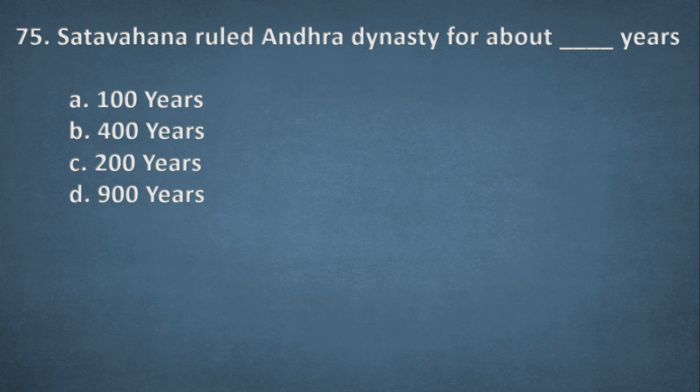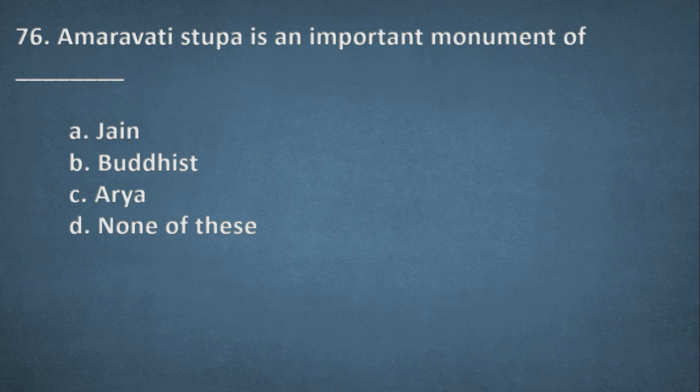Next one. Satavahana ruled Andhra dynasty for about dash years. Options: 100 years, 400 years, 200 years, 900 years. The right option, B, 400 years. Next one. Amaravati Stupa is an important monument of. Options: Jain, Buddhist, Arya, None of these. The right option, B, Buddhist.